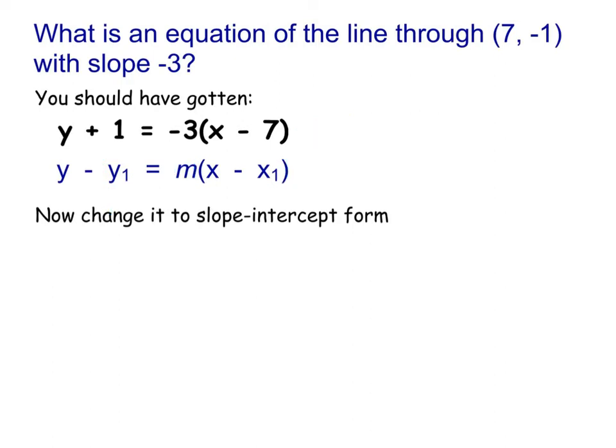Alright, so, in order to turn this into slope-intercept form, I'm first going to get rid of the parentheses. That means I'm going to distribute in that negative 3. When I do that, on the left-hand side, it's still y plus 1. On the right-hand side, I'm going to do negative 3 times x. That gives me negative 3x. And then, I do the negative 3 times the minus 7. A negative times a negative is a positive. So, that's a positive 21.